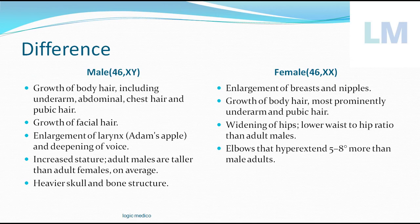Before going into syndrome details, let's understand the difference between male and female karyotypes. Each cell of a male contains 46 chromosomes; the last pair is the sex chromosome X and Y. In females, each cell also contains 46 chromosomes, but the last pair is XX. The presence of Y makes the individual male; the absence of Y makes the individual female.